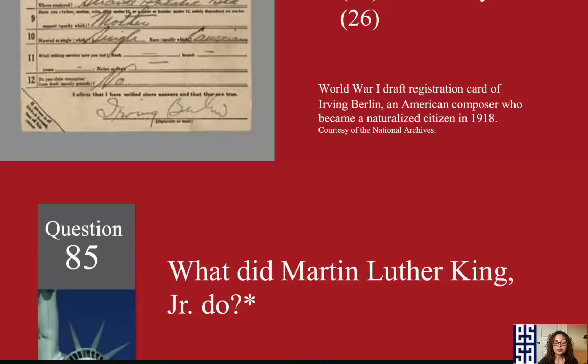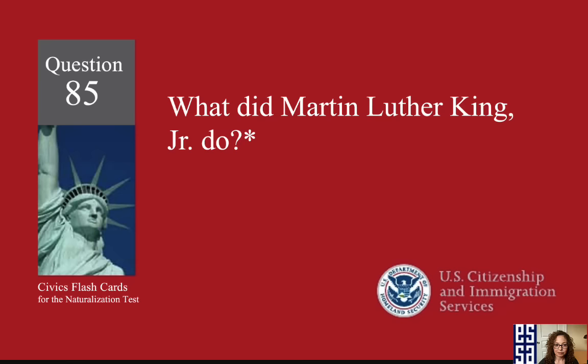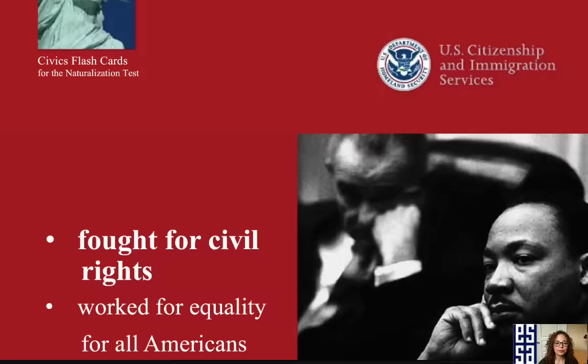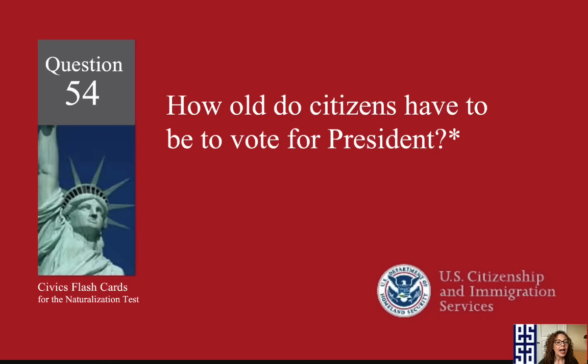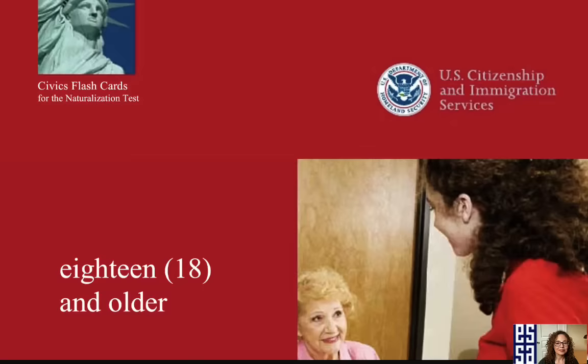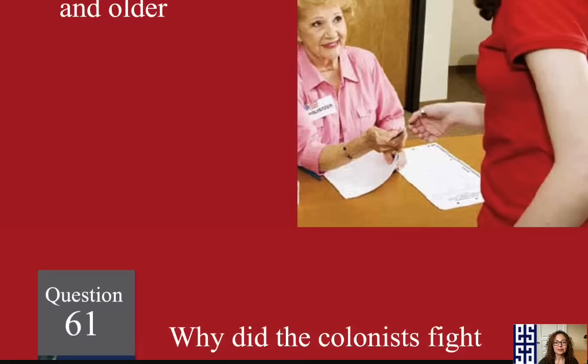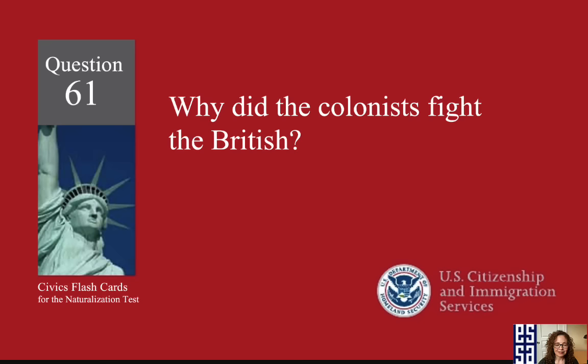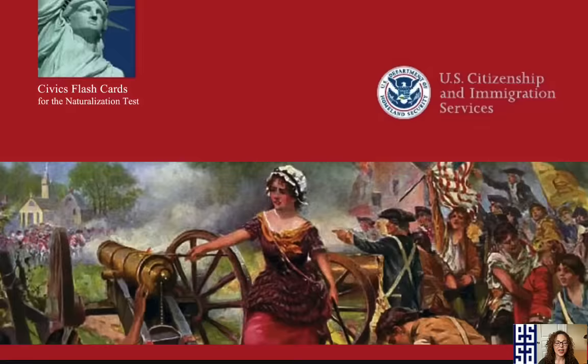What did Martin Luther King Jr. do? He fought for civil rights. How old do citizens have to be to vote for president? 18 and older. Why did the colonists fight the British? Because of high taxes.